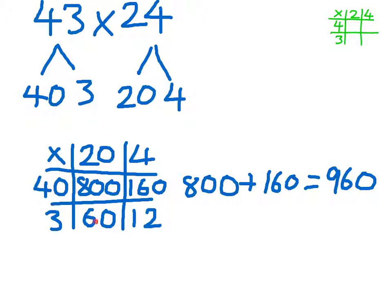Then I look at the row below. 60 and 12. 60 plus 12 gives me 72.